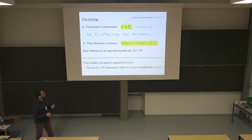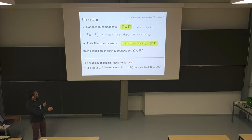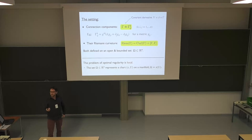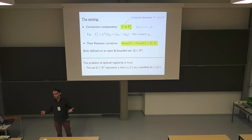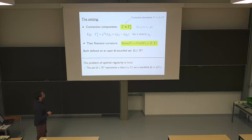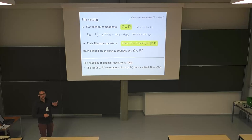What really makes this a connection is the way it transforms from one coordinate system to another via the connection transformation law — that's the only thing that makes it a geometric object. The problem of optimal regularity is local: it's about these coordinate representations of connections and the regularity in the coordinate representation.